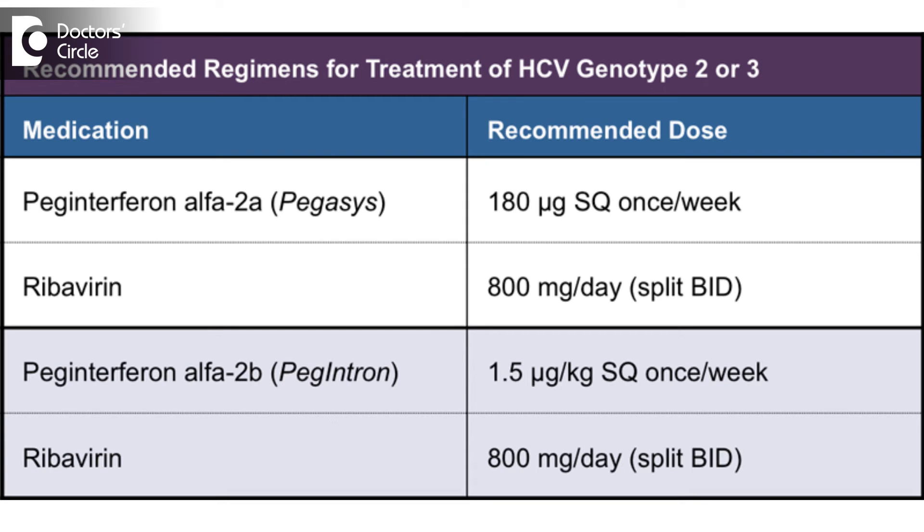For HCV genotype 3, the combination is sofosbuvir with another agent, which can be either interferon or some other drug. Treatment of HCV is a rapidly changing field, and guidelines are updated regularly. You should look up the latest treatment recommendations before starting on treatment.